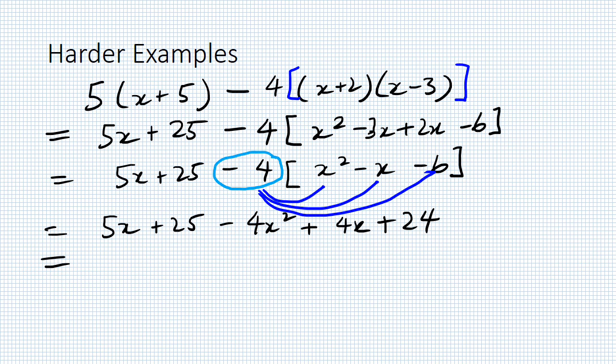Collecting our like terms. We've got x's, constant terms, and a single term involving x². Remember, we're going to write the x² term first. So -4x² + 9x + 49.